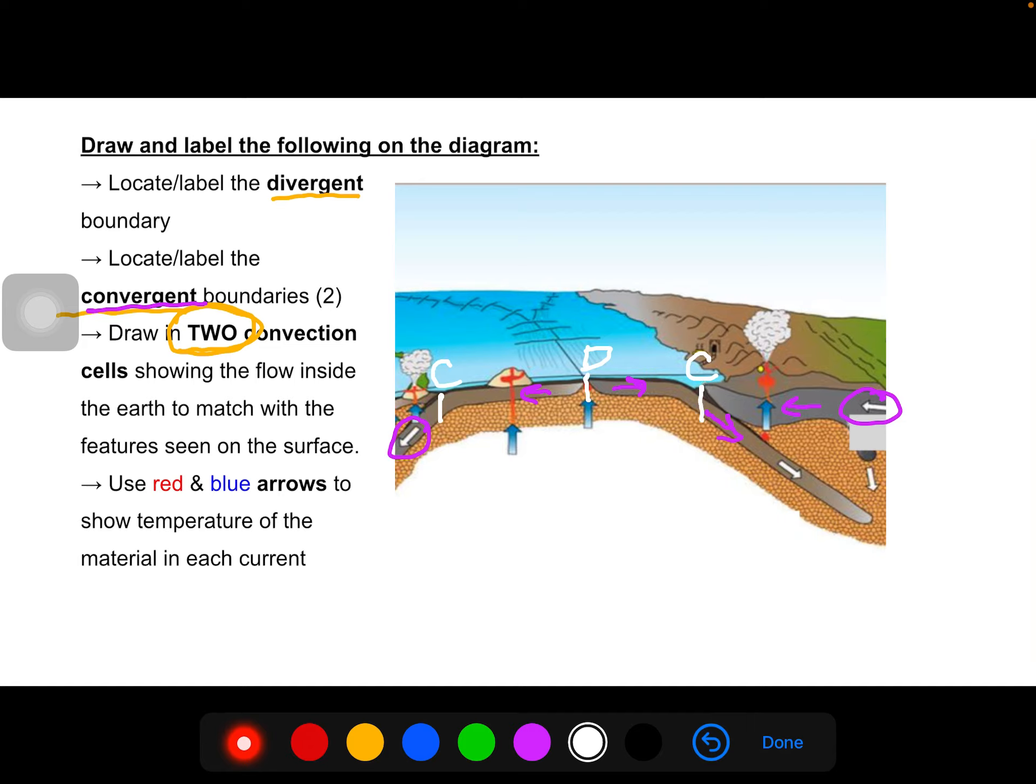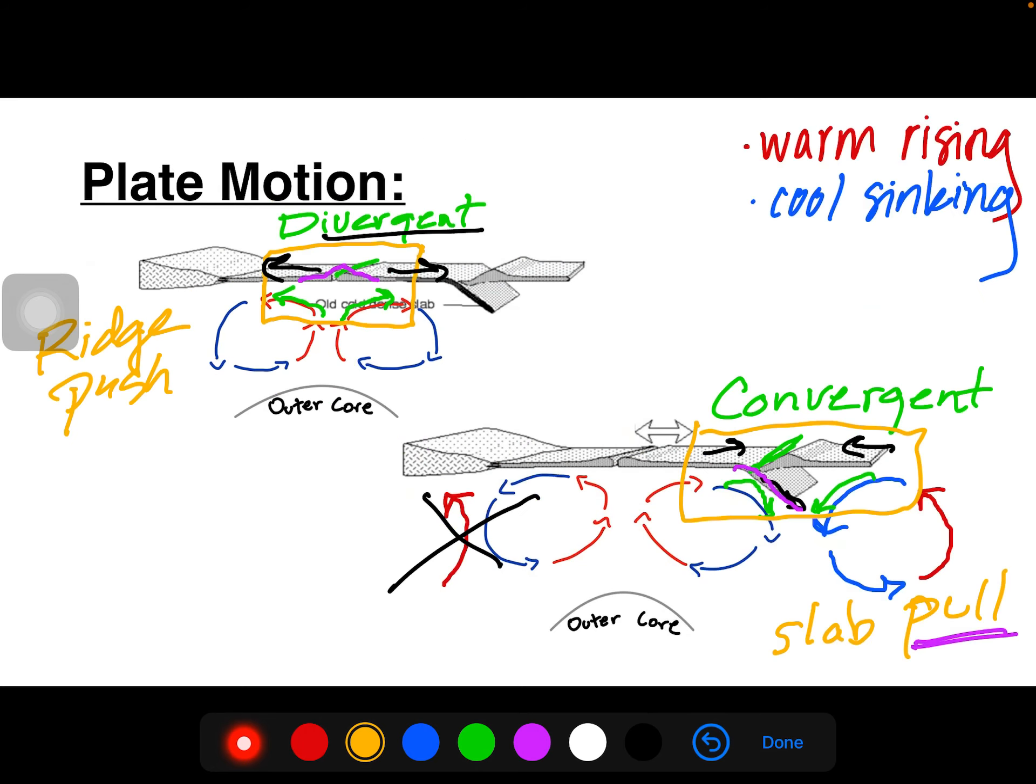So now that we have those located, we want to draw in our two convection cells, reminding that we want to use our colors, red and blue, to show warm rising, cool sinking in the correct locations. So if we look back, our divergent boundary is the location of that warm rising, and our convergent boundary is the location of the cool sinking.